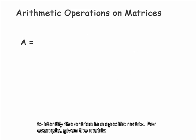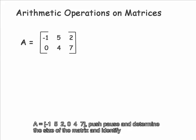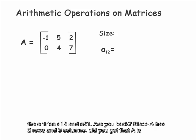For example, given the matrix A with row 1: negative 1, 5, 2, and row 2: 0, 4, 7, push pause and determine the size of the matrix and identify the entries A sub 12 and A sub 21.